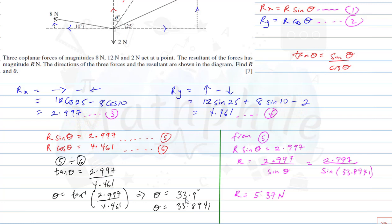So that answers the question for seven marks: theta is 33.9 degrees and R is 5.37 newtons. In the next video we're going to talk about forces in equilibrium — what it means when an object is in equilibrium and its implications. That's all for today's class; see you in the next video.